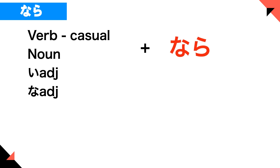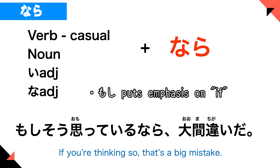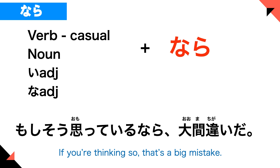How do we use nara? You can put verb casual, noun, i-adjective, or na-adjective before nara. Let's look at an example sentence. Moshi is used to emphasize 'if', like a hypothetical. So 'moshi sou mottiru nara' means 'if you think so.' O means big, and machigai means mistake, so 'o machigai' means a big mistake.